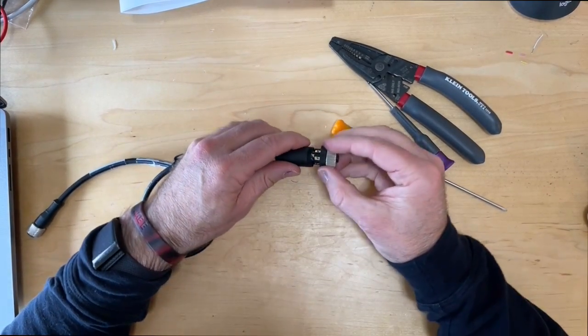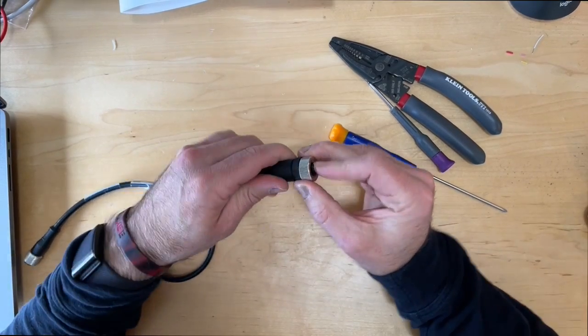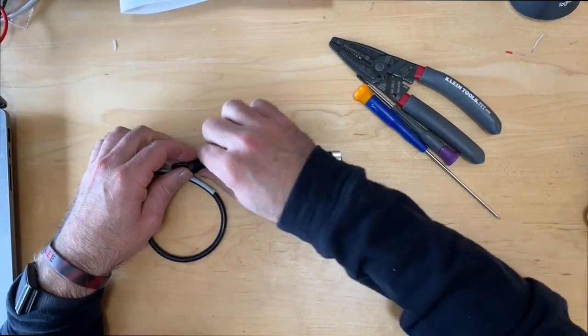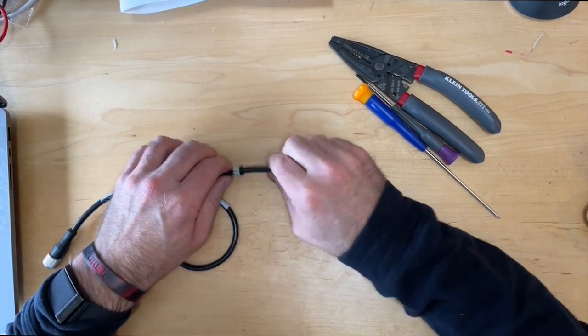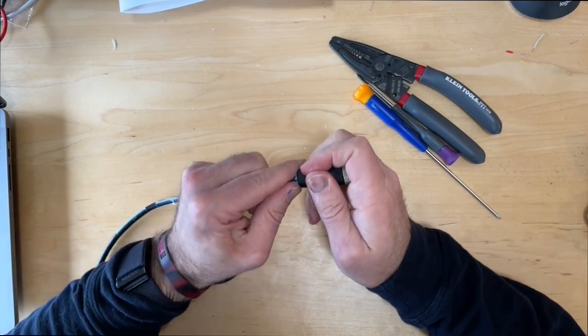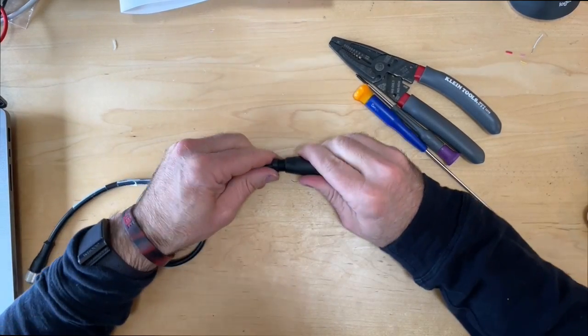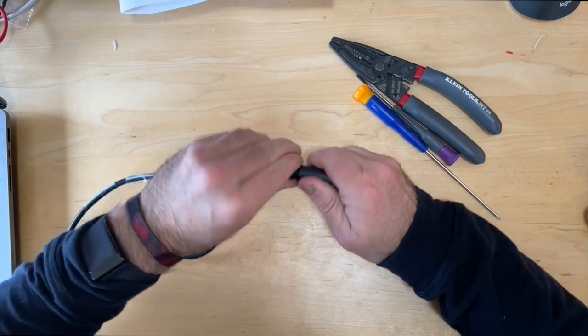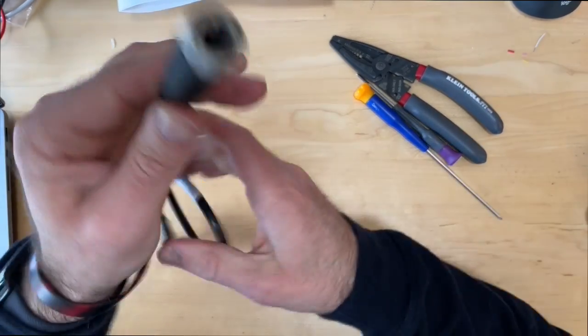Then we close this up. Screw that in. Push our little wire nut up here. And then we'll tighten it like that. And we're done.